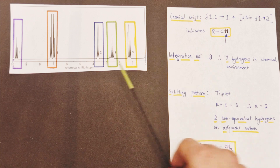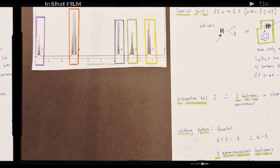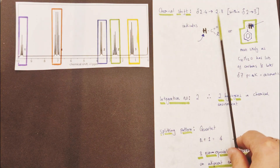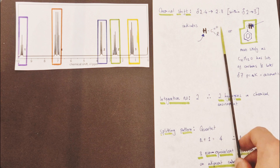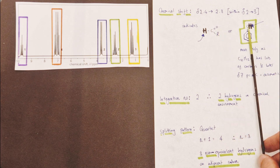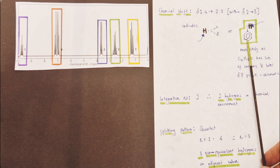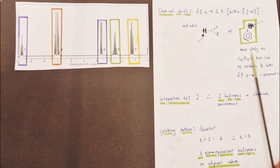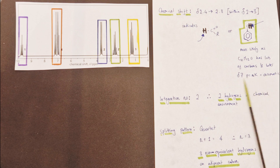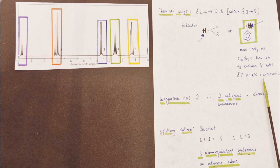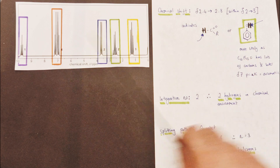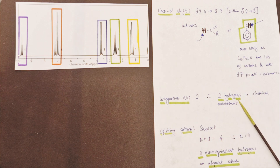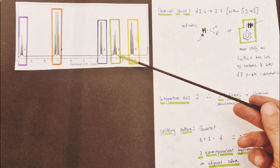Now let's look at the green area — this quartet. The chemical shift is approximately 2.4 to 2.8 parts per million, within the 2 to 3 ppm range in the data booklet. We have two options: hydrogens directly attached to a carbonyl, or hydrogens attached to a carbon directly bonded to a benzene/aromatic ring. The more likely candidate is the aromatic ring, which we'll confirm when we get to the peak at 7 ppm. The integration number is 2, so there are two hydrogens in this chemical environment, and the splitting pattern of 4 peaks is a quartet.